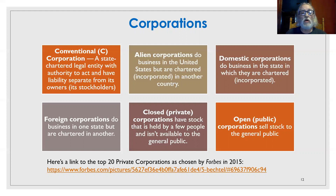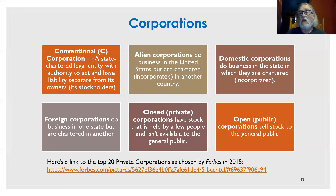We also have what are considered private corporations, which are considered closed. They still have stock, but that stock is owned by just a few people — usually the founders. It could be a family or one or two people. The stock is not made available to the general public, so they really own everything, and having all that stock increases personal wealth. Then, of course, we have regular public corporations, which could be domestic or foreign corporations from another state. They sell stock to anybody who has the money to buy it on the stock exchange.